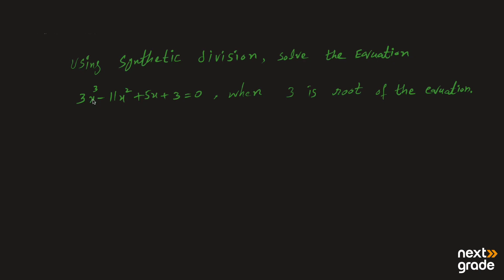یہ cubic equation ہے — cubic equation ایک ایسی equation ہوتی ہے جس میں maximum power 3 نظر آئے variable کی۔ اس پوری equation میں آپ کو maximum power 3 ہی نظر آ رہی ہے اس لیے یہ cubic equation کہلائے گی۔ Root وہ value ہوتی ہے جسے equation میں put کریں تو equation satisfy ہو — یہی solution set میں لکھا جاتا ہے، اسے ہم root of equation کہتے ہیں۔